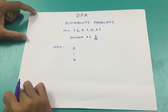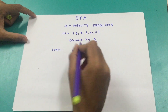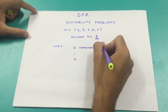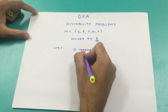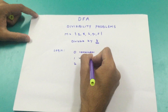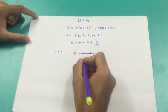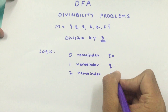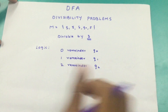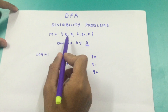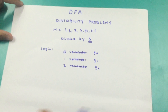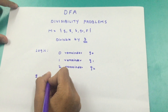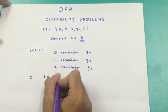I'm going to consider each of these remainders as a state. When the remainder is 0, the state will be q0; for remainder 1, the state will be q1; and for remainder 2, the state will be q2. This takes care of our Q. Now for sigma, since we are going to consider the decimal system, sigma consists of all decimal digits.